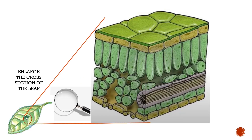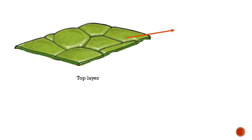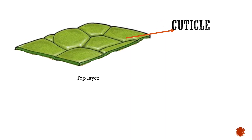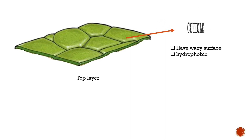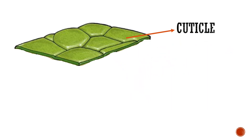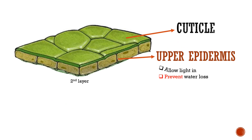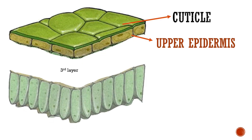Now we enlarge the cross-section of the leaf. Let's watch and learn the cells of the leaf. The top layer is the cuticle. The cuticle has a waxy surface and it's hydrophobic. The second layer is the upper epidermis. The upper epidermis allows light in and prevents water loss.